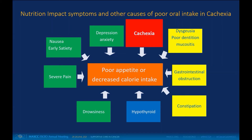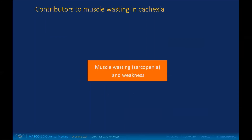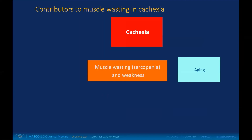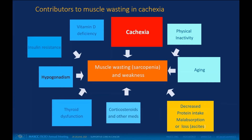Other issues relate to specific cancers, such as gastrointestinal obstruction associated with GI and head and neck cancers. There are also other contributors to muscle wasting beyond cachexia, including aging, which causes decline in muscle mass and quality. A host of endocrine abnormalities can independently cause decreased muscle size and weakness, including low testosterone, vitamin D deficiency, thyroid dysfunction, and various medications.